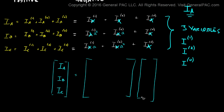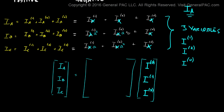We're going to put our three variables in this column, but we'll start with Ia zero sequence first. You'll see why in just a little while. Then we'll place Ia positive sequence right underneath, and then Ia negative sequence underneath that. Now let's represent these equations in this matrix.